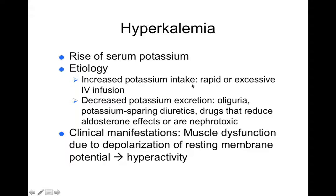Hyperkalemia means high blood potassium. This can come from excessive intake through IV infusion — like banana bags have a lot of potassium — or decreased potassium excretion, like low urine output or potassium-sparing diuretics. High blood potassium causes hyperactivity of muscle — skeletal, smooth, and cardiac muscle are hyperactive. For the heart, it becomes so hyperactive it stays in a contracted state, stops beating, and won't relax to fill with blood. Hyperkalemia stops your heart — not because it's inhibited, but because it's too excited. You get tetanus — sustained muscle contraction — and that can be fatal.